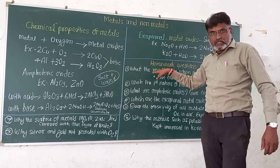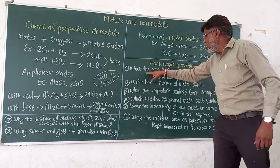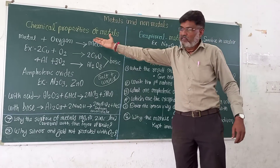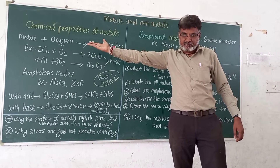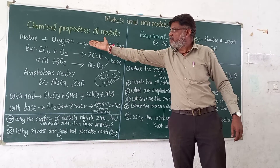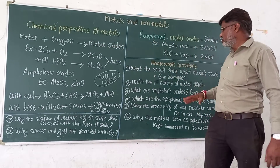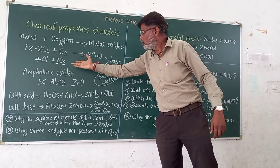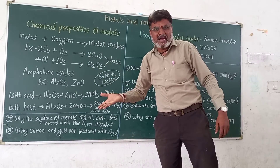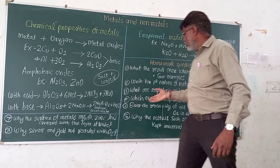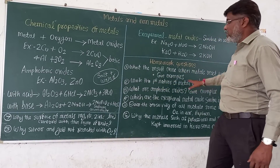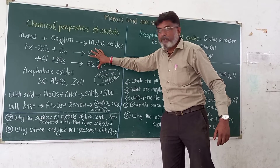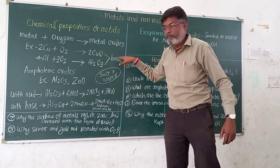Now the question is: what result comes when a metal reacts with O2? Give an example. The answer: when a metal reacts with O2, it forms metal oxides. For example, copper reacts with O2 to form copper oxide; aluminium reacts with O2 to form aluminium oxide; magnesium reacts with O2 to form magnesium oxide. Next, what is the pH nature of metal oxides? It is basic.